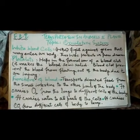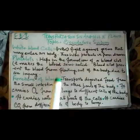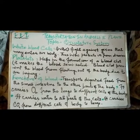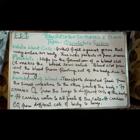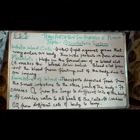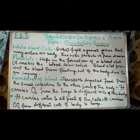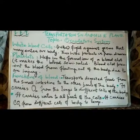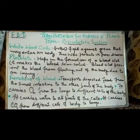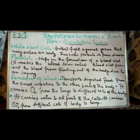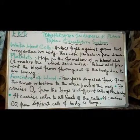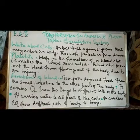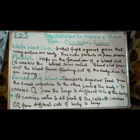So, white blood cells — what do they do? WBCs fight against germs that may enter our body, thus WBCs protect us from diseases. So in the body, we fight against germs and diseases. White blood cells protect us from diseases. Now we will look at platelets.